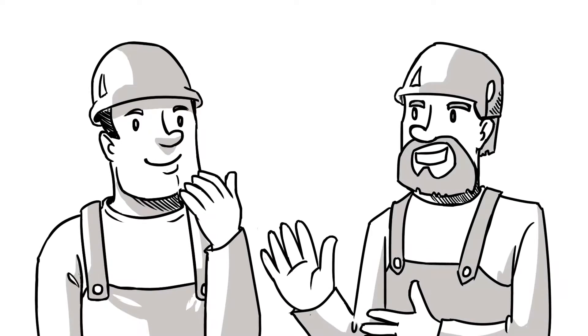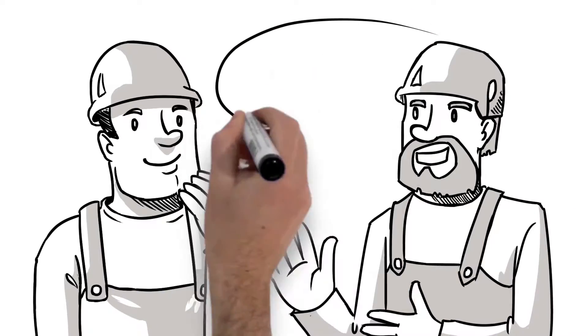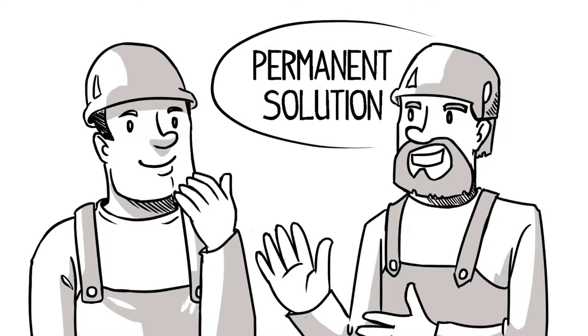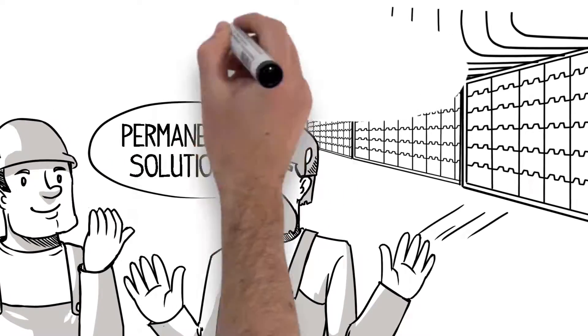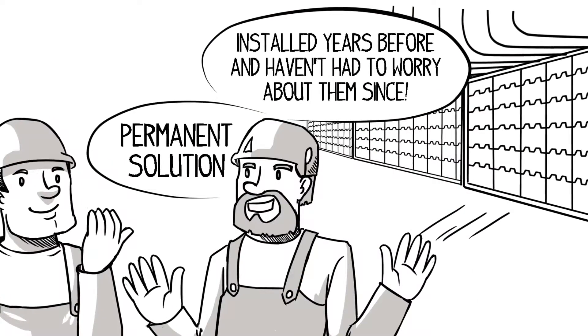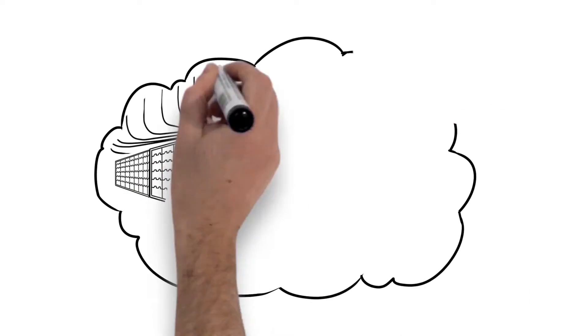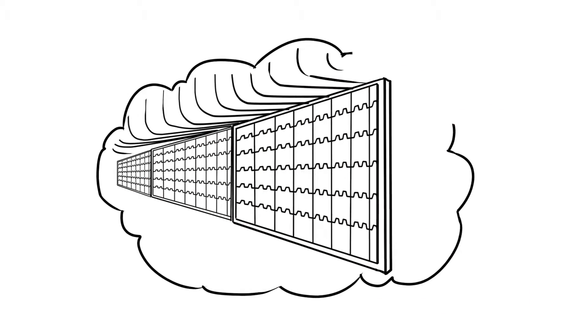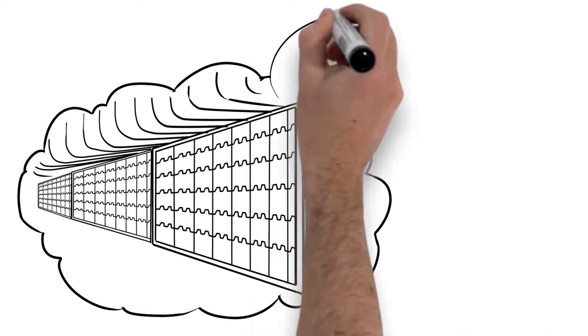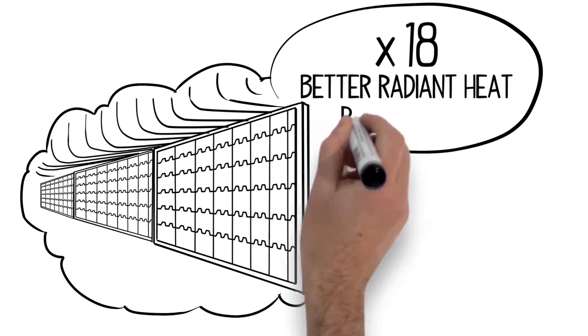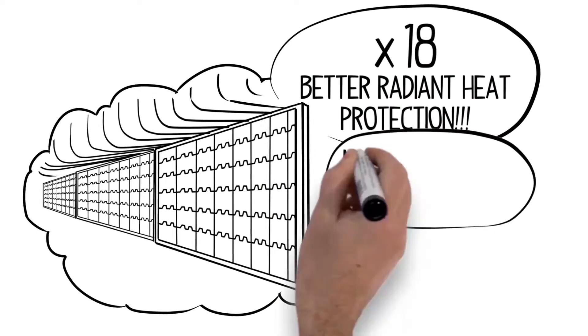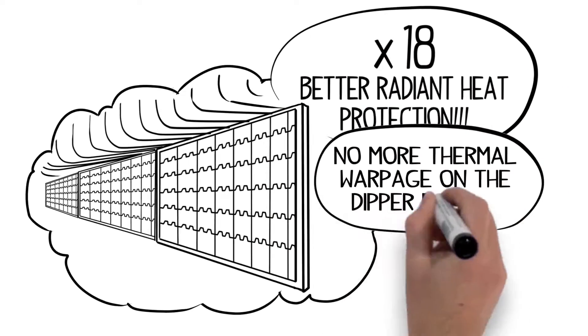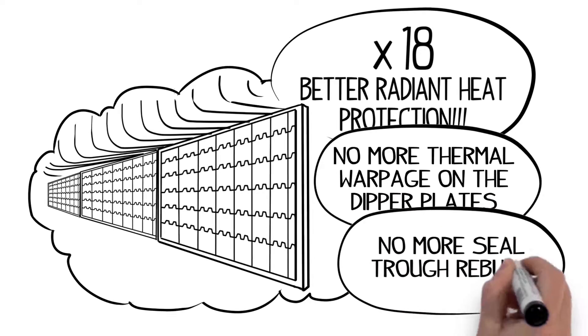A few years ago, Joe's friend at another station told him about a permanent solution. They had installed the new solution years before and haven't had to worry about them since. Not only does the new solution provide a lifetime of protection, it actually adds 18 times better radiant heat protection. No more thermal warpage on the dipper plates. No more seal trough rebuilds.